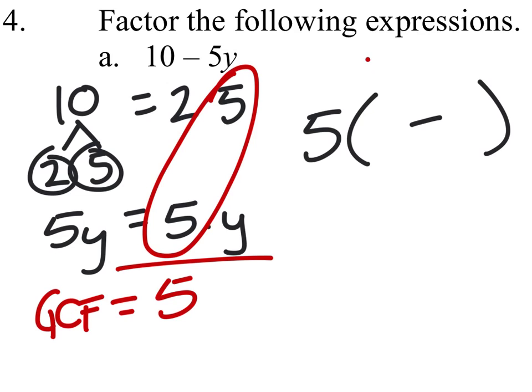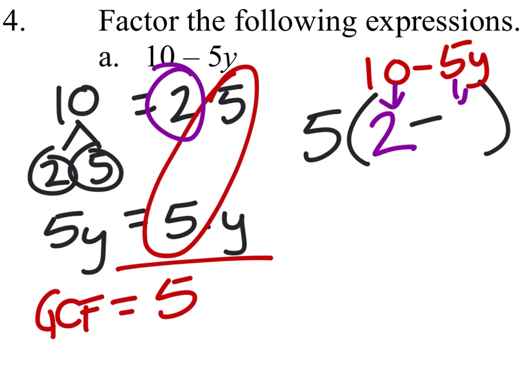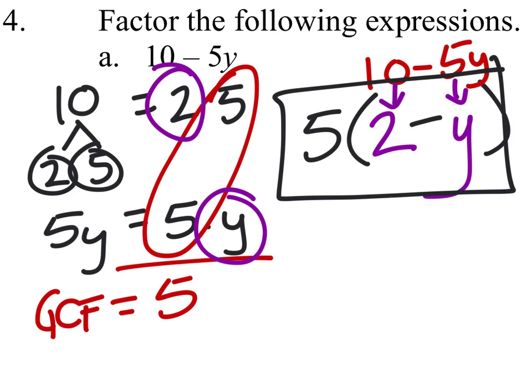And so it used to be 10 minus 5y. But from the 10, what's left over? There's 2. From the 5y, what's left over? The y. So this is our final factored answer.